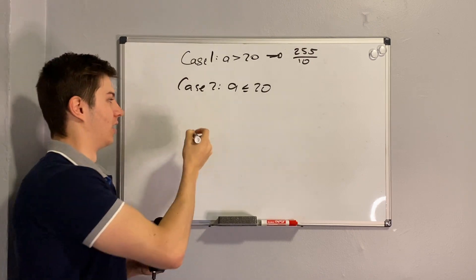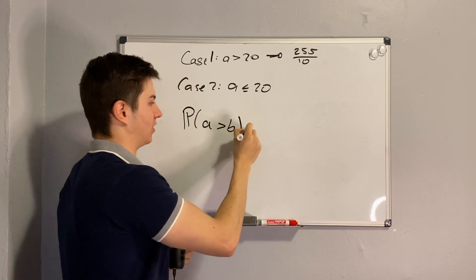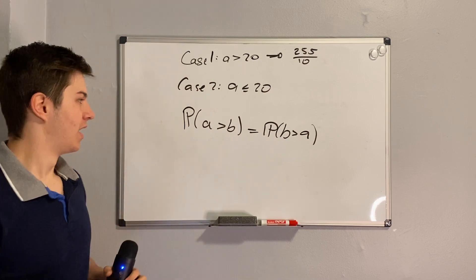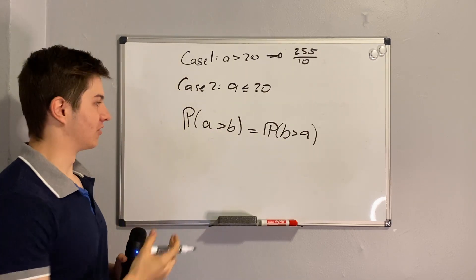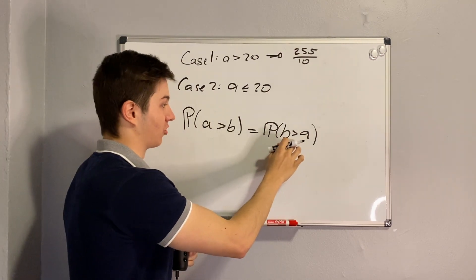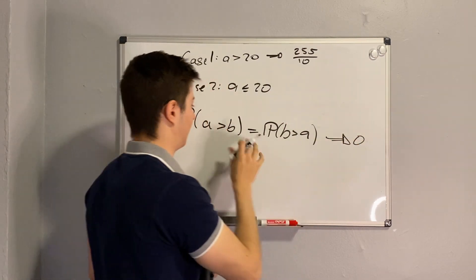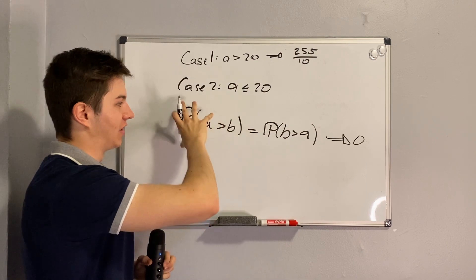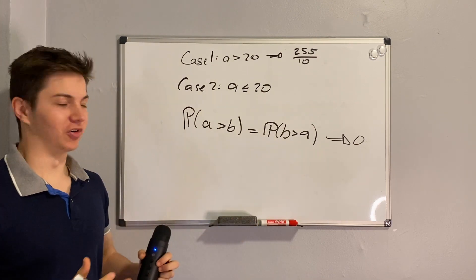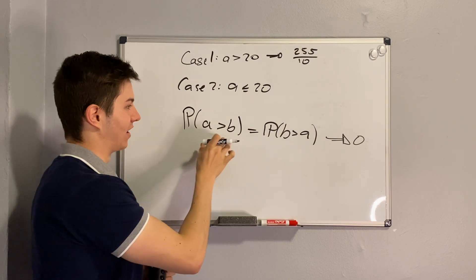We can notice that the probability that A is greater than B equals the probability that B is greater than A, just by symmetry. This means the expected payoffs from those two cases must cancel out: when A > B we win A dollars, and when B > A we lose B dollars, so the combined expected payoff is zero. The only remaining sub-case to consider is where A is equal to B.